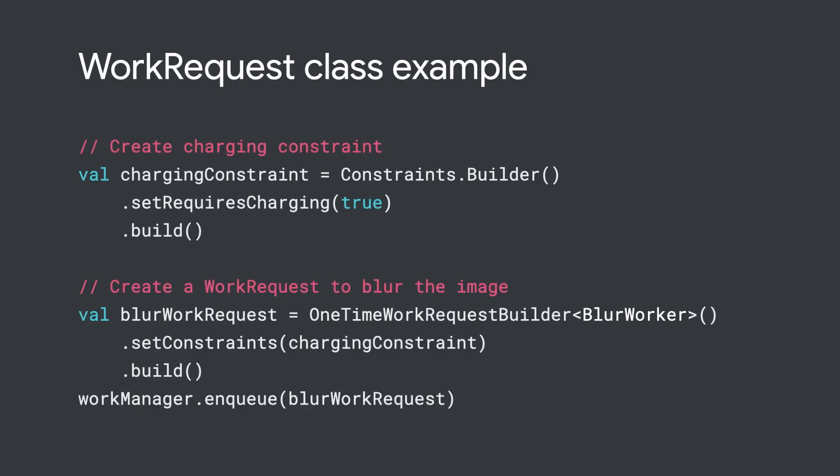Next, you need to create a WorkRequest that represents a request to perform the task. The WorkRequest also allows you to specify constraints over this task, such as run this task only while the phone is charging or when the device is connected to Wi-Fi. You can also use WorkRequest to specify the frequency that you want to run your task, such as once or periodically.